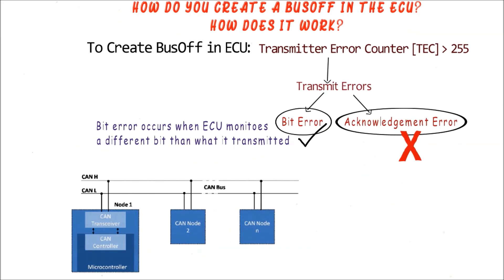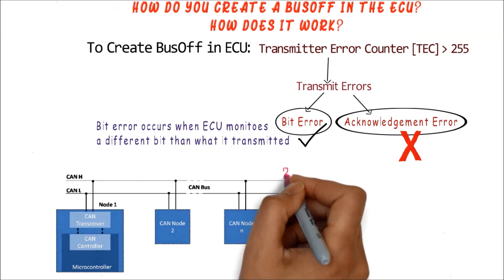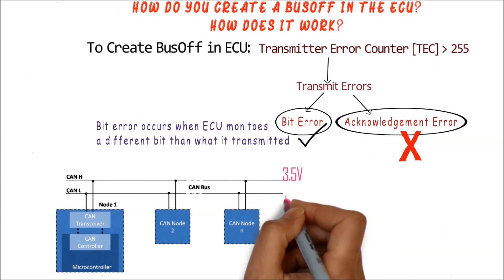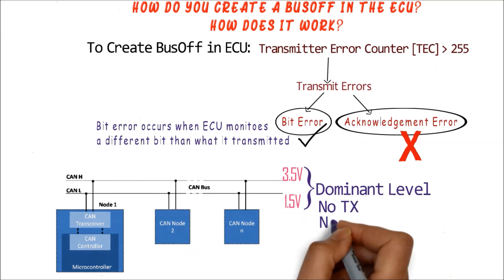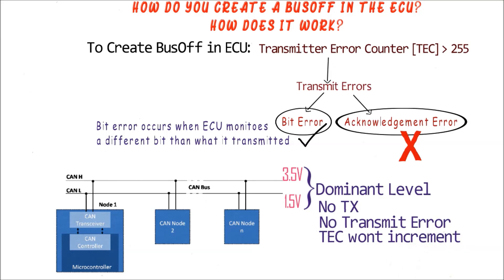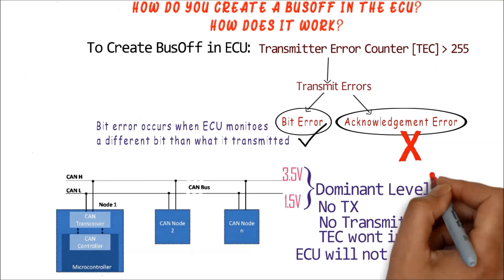Let us analyze both cases. First, if we short the CAN high line to 3.5V and CAN low line to 1.5V so that the difference voltage is always 2V, then we can say the CAN bus is stuck at the dominant level. But if the bus is stuck at the dominant level, the ECU will never start transmitting a frame, as it thinks the bus is not idle — remember, the idle state is a recessive state. Since there is no transmission, there is no transmit error, so the TEC won't increment and the ECU will not enter bus-off. So forcing bus-off by making the bus dominant level is out of the question.